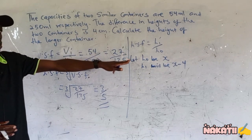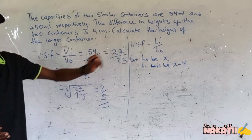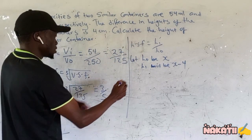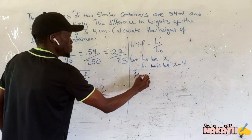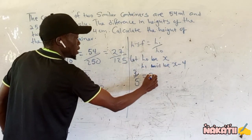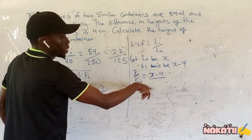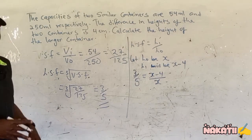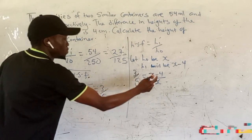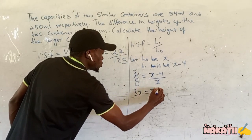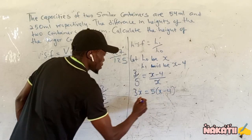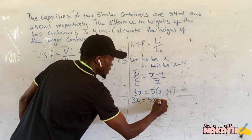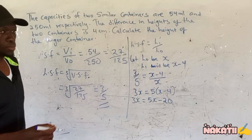So if the larger container is x, the smaller container will be x minus 4. From this, the linear scale factor 3 over 5 equals length of image, which is x minus 4, divided by length of object, which is x. Cross multiplying gives us 3x equals 5 multiplied by (x minus 4), which gives us 3x equals 5x minus 20.